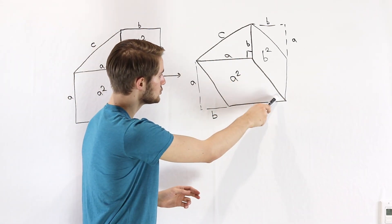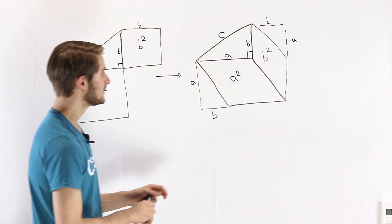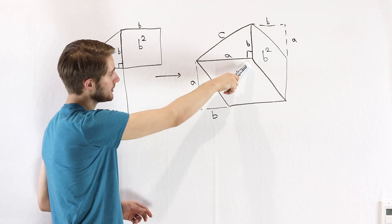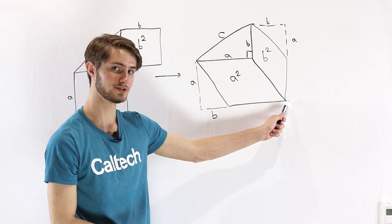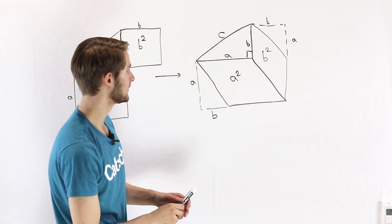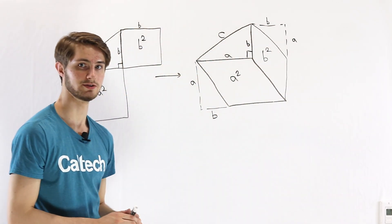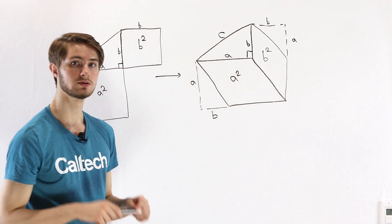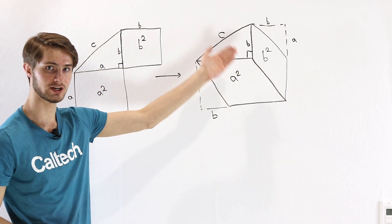Notice that these two parallelograms share a common side. The side on the parallelogram with area a squared starts at the bottom right corner of this triangle, goes down a units, and goes to the right b units. The side of the parallelogram with area b squared also goes down a units and to the right b units. That means both sides connect the same pair of points, which means they are the same line segment — so these parallelograms share that side.